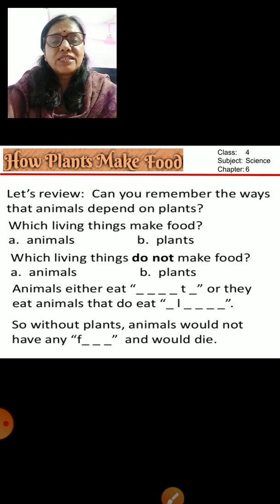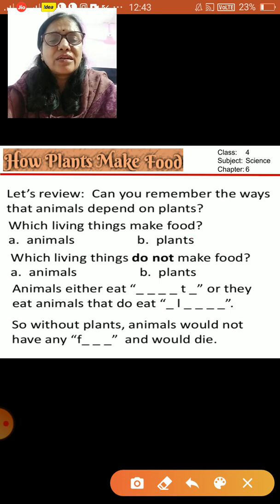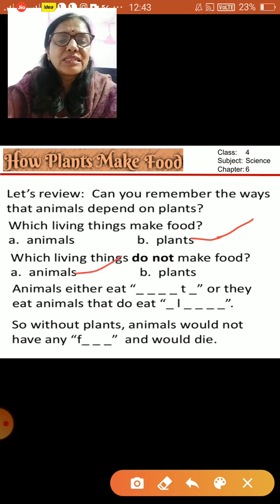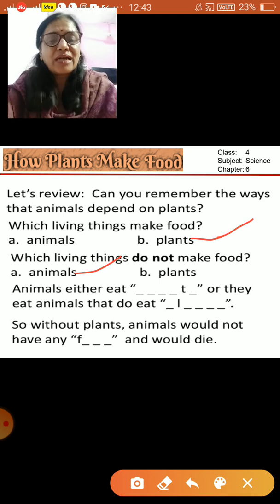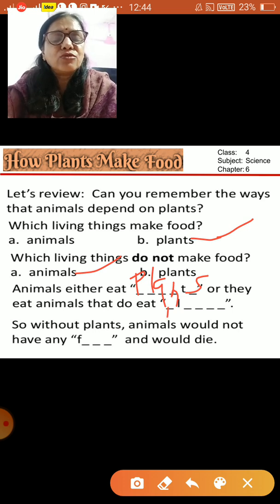Can you remember the ways animals depend on plants? Plants make their own food, while animals do not. Animals either eat plants, or they eat animals that eat plants. Carnivores, even though they do not directly eat plants, eat the animals that eat the plants.